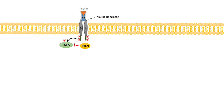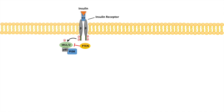When IRS is phosphorylated and activated, other proteins including PI3K — phosphatidylinositol 3-kinase — will bind to IRS through its P85 subunit via an SH2 domain. Once PI3K binds to IRS, it will phosphorylate PIP2 (phosphatidylinositol 4,5-bisphosphate) to PIP3 (phosphatidylinositol 3,4,5-triphosphate).